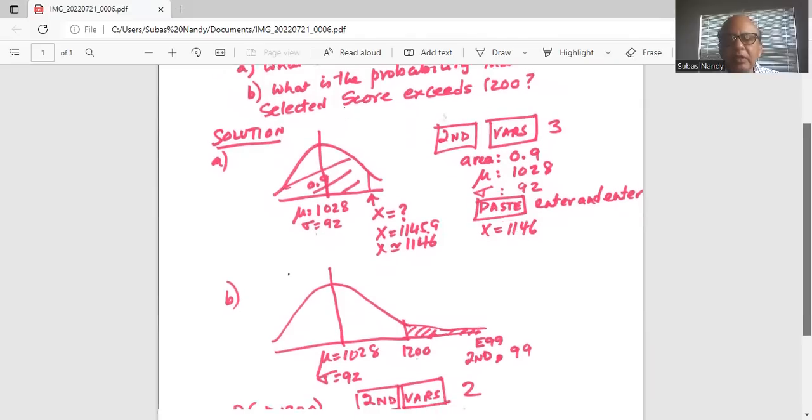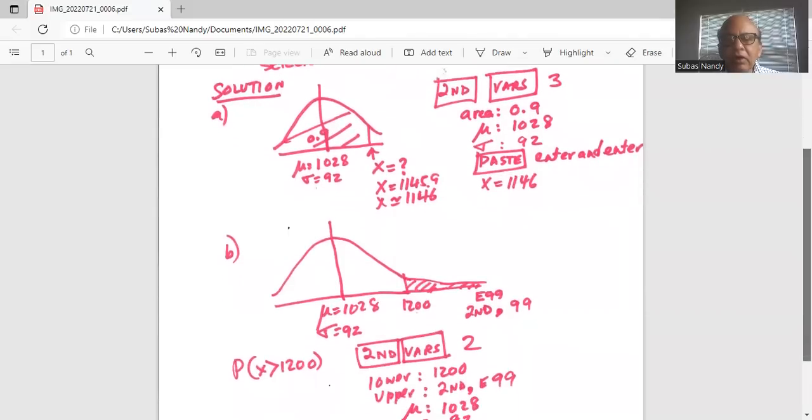So, we want to find probability X greater than 1200, which is the same as the area under the normal curve on the right tail to the right of 1200.